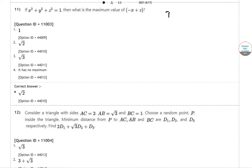Hello dear students, today we are solving DSE 2021 question paper. First question: x square plus y square plus z square equal to 1, and the maximum value of minus x plus z.